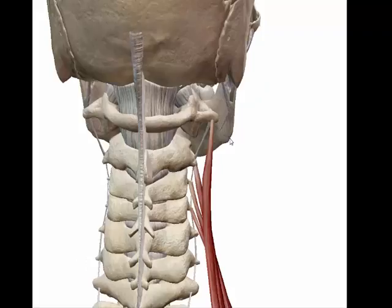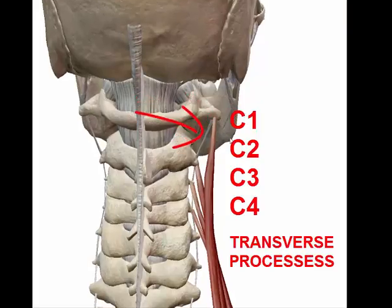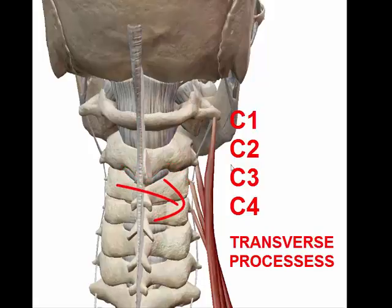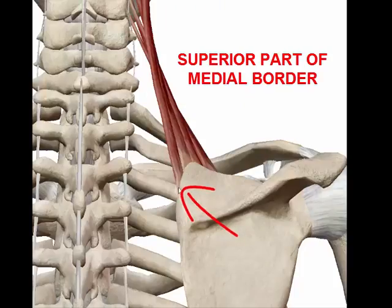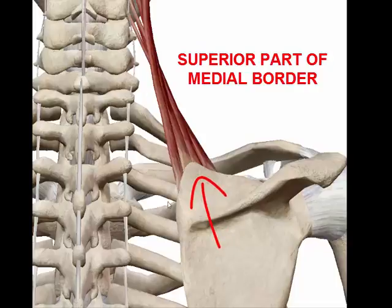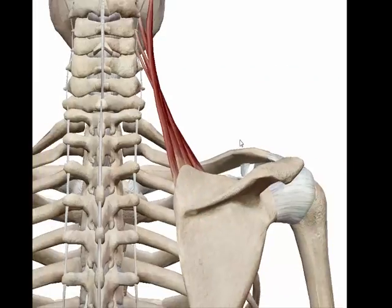It starts from the transverse processes of C1 to C4 and inserts to the superior part of the medial or spinal border of the scapula.